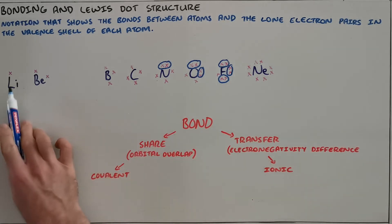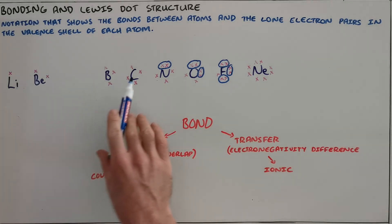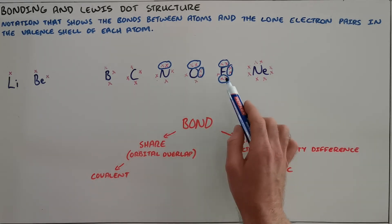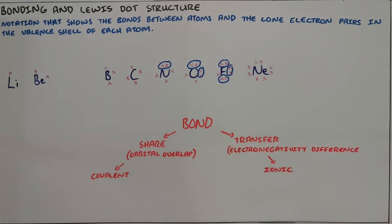So here we can see that there are no lone pairs in lithium, beryllium, boron, or carbon. There's one in nitrogen, two in oxygen, three in fluorine, and four lone pairs in neon.